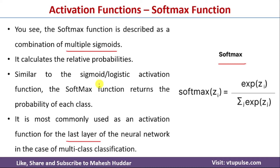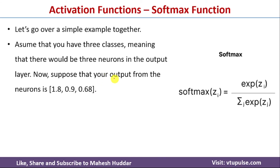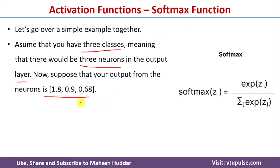Let us take a simple example to understand softmax. Assume there are three classes for the given problem. In that case we need three neurons in the output layer. Let us assume the output from each neuron is 1.8, 0.9, and 0.68 — in this case we cannot use sigmoid, so we apply softmax.